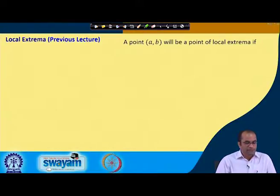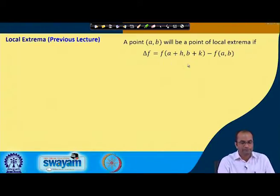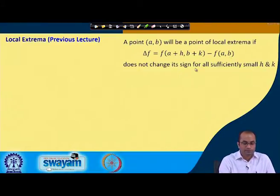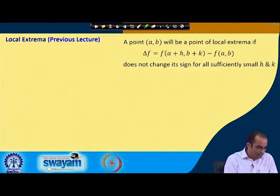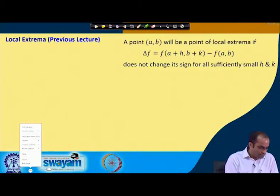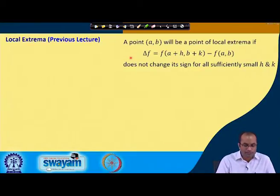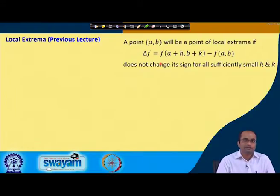In the previous lecture, we saw that a point will be a point of local extrema if delta f — the difference between the function value at neighborhood points of (a, b) and the function value at (a, b) — does not change its sign for sufficiently small h and k. In that case it has a local maxima or minima, but if it changes its sign, then the point is a saddle point.